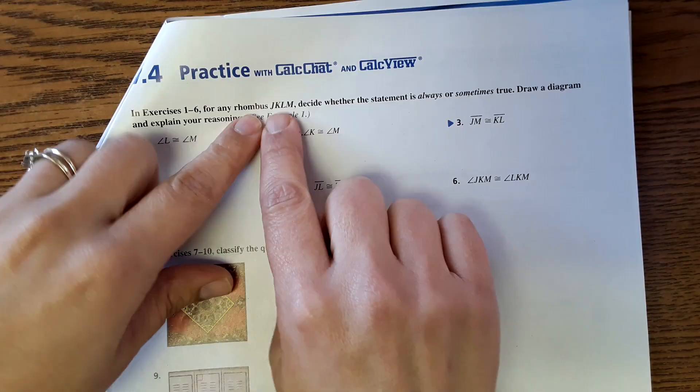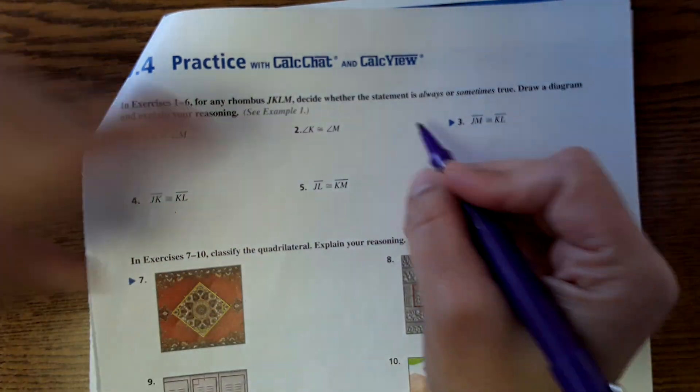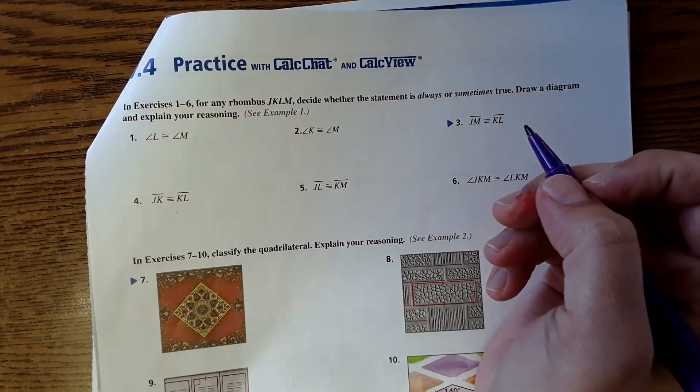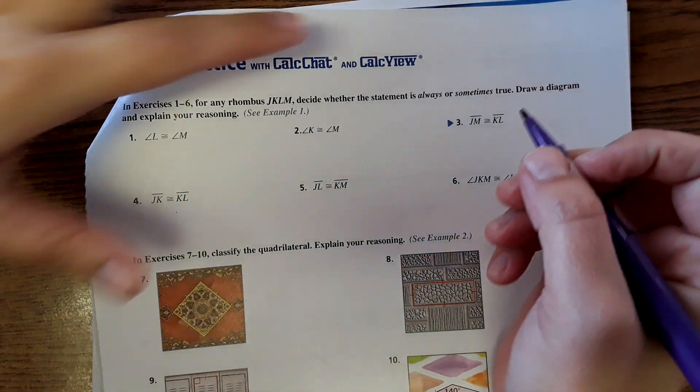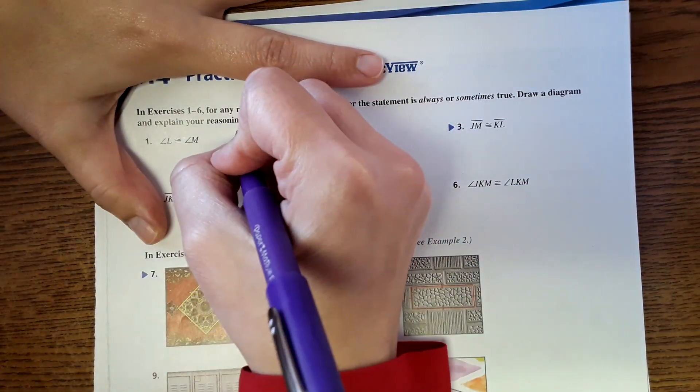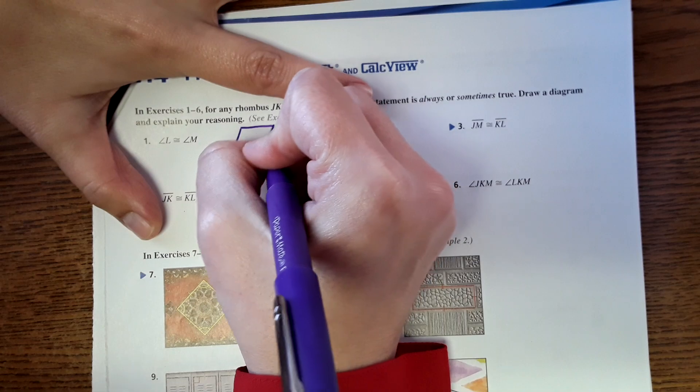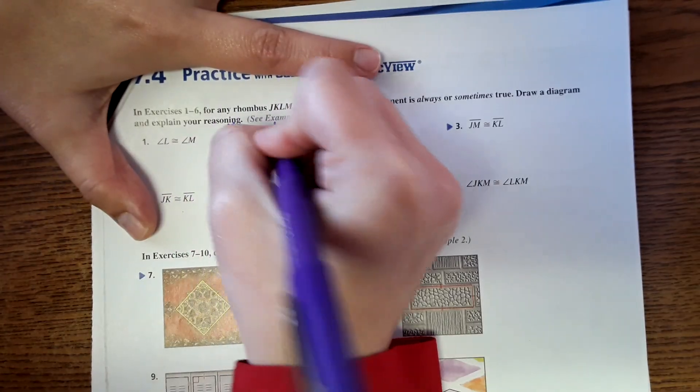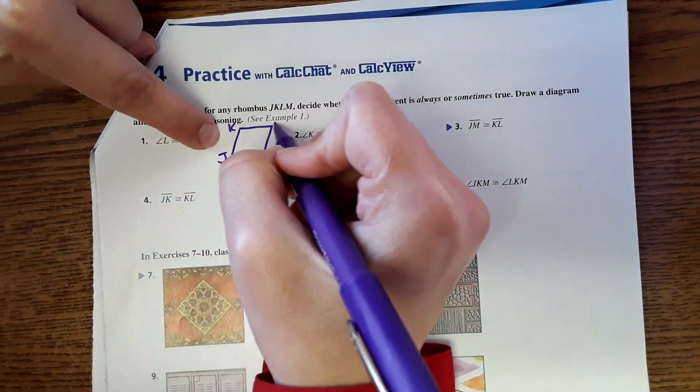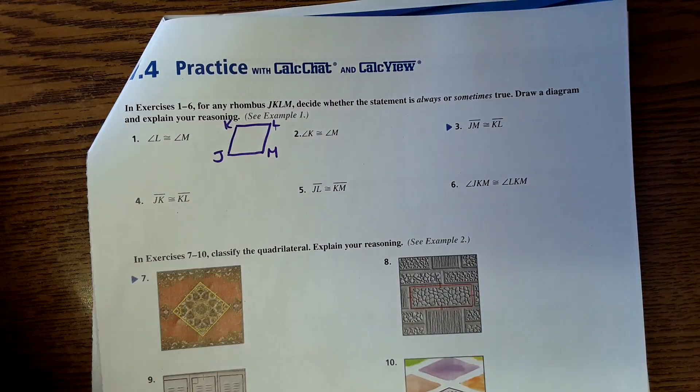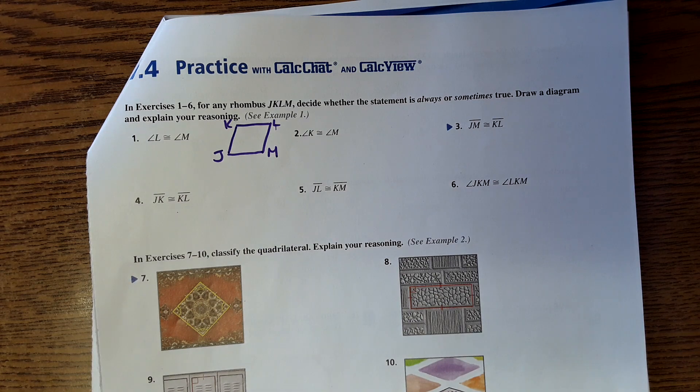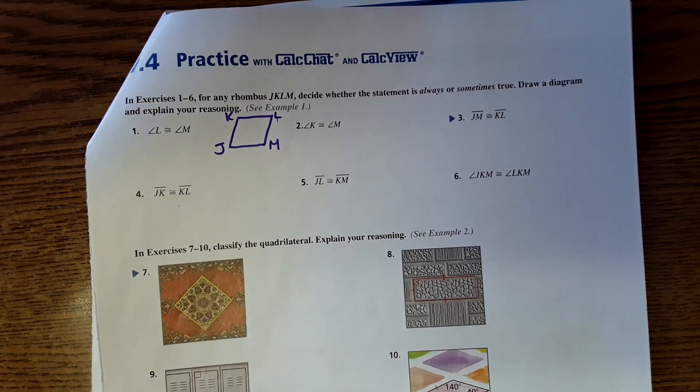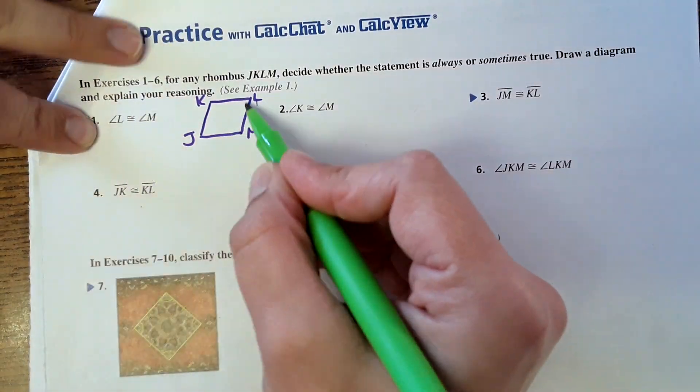Starting at the top, it says for any rhombus JKLM, state whether these statements are always or sometimes true and draw a diagram and explain your reasoning. We're going to try to shortcut this as much as we can. I'm going to draw one rhombus as best I can as a reference. Call it JKLM. Remember when using these letters, you have to go in order. So that's what it wants to know whether these statements are always or sometimes true for a rhombus.